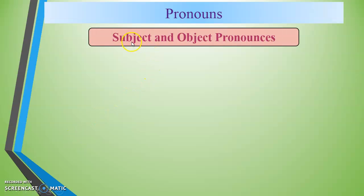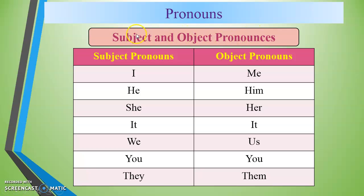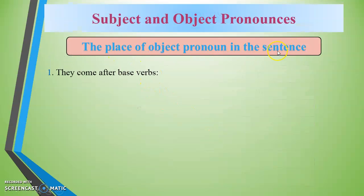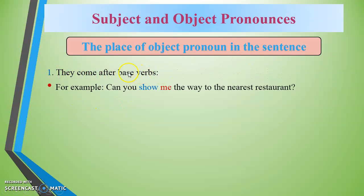The first point I want to talk about is subject and object pronouns. Subject pronouns are: I, he, she, it, we, you, they. Object pronouns are: me, him, her, it, us, you, them. They come after base verbs.